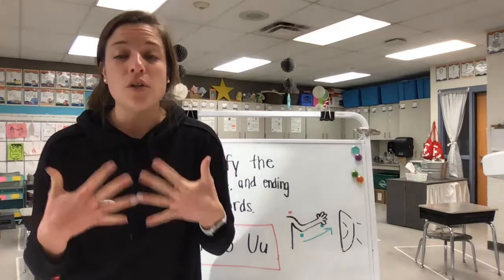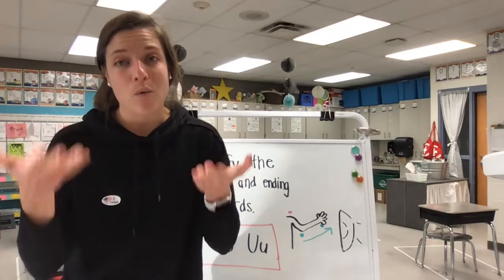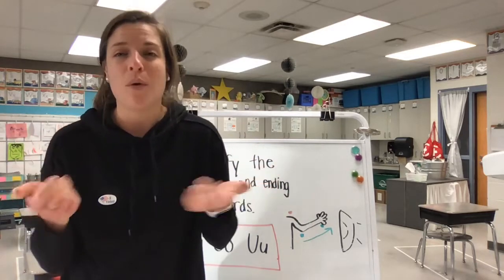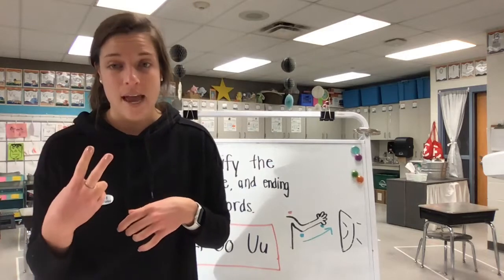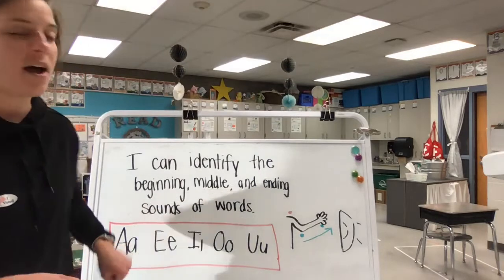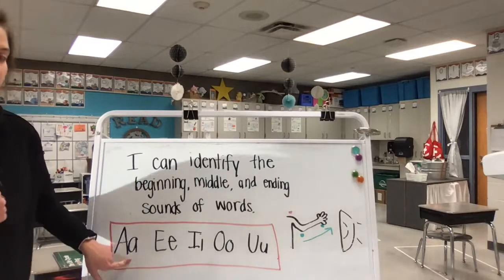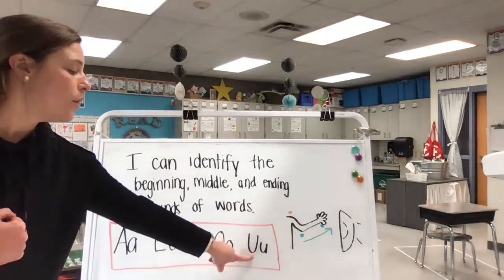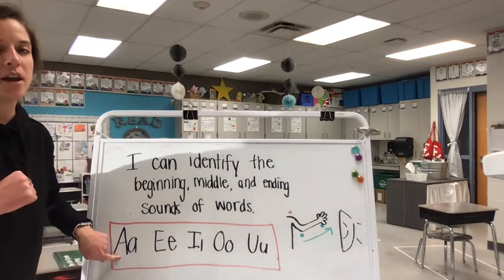The vowels are so special for two reasons. Number one, they make words real. If we didn't have them we'd sound like we'd be grunting at each other and we wouldn't have real words. They also have two sounds. So let's go over our vowels. First let's name our vowels and then we'll say our sounds. So we have A, E, I, O, U.